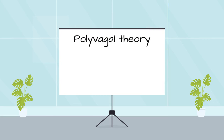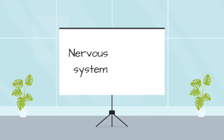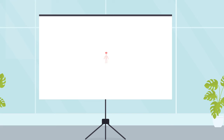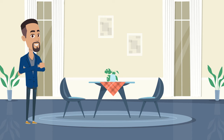Polyvagal theory provides an explanation for some common symptoms such as chronic, persistent and debilitating anxiety and depression, by explaining how our nervous system is connected to our emotional responses. To help us understand polyvagal theory, let me introduce you to our nervous system.